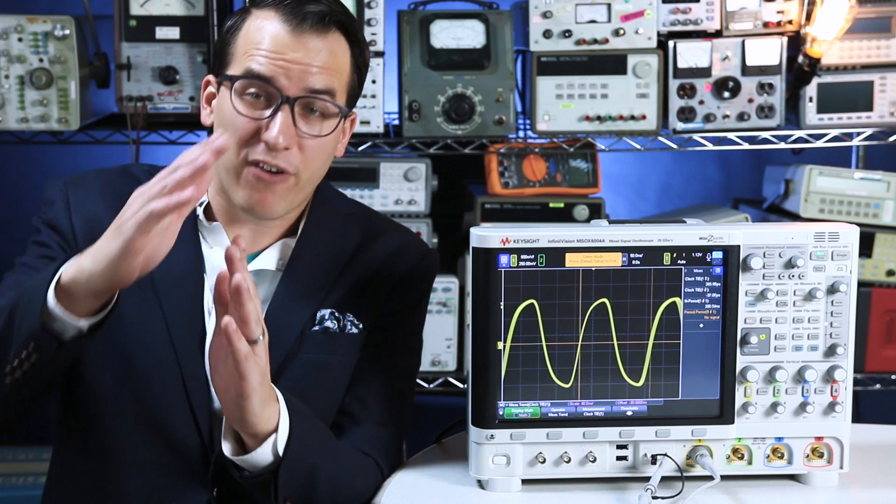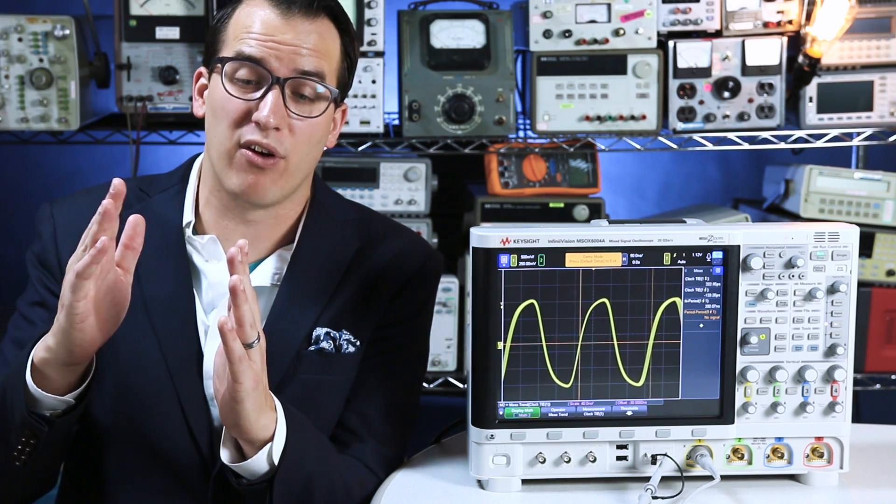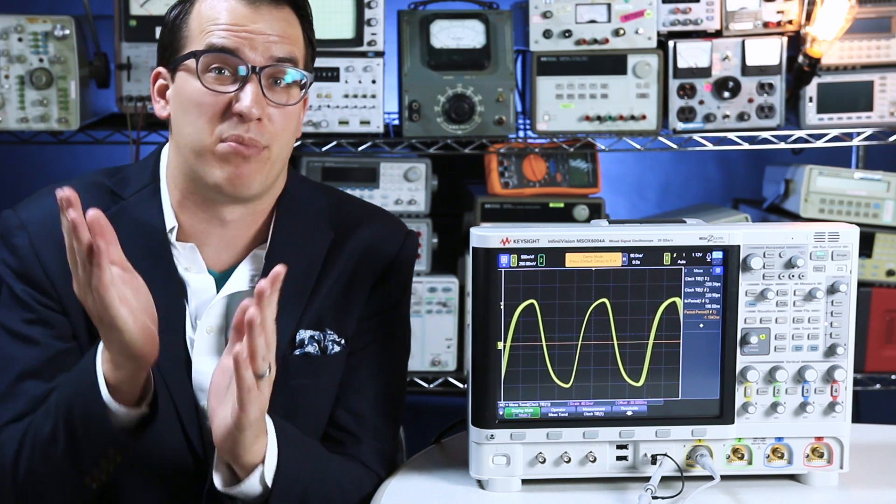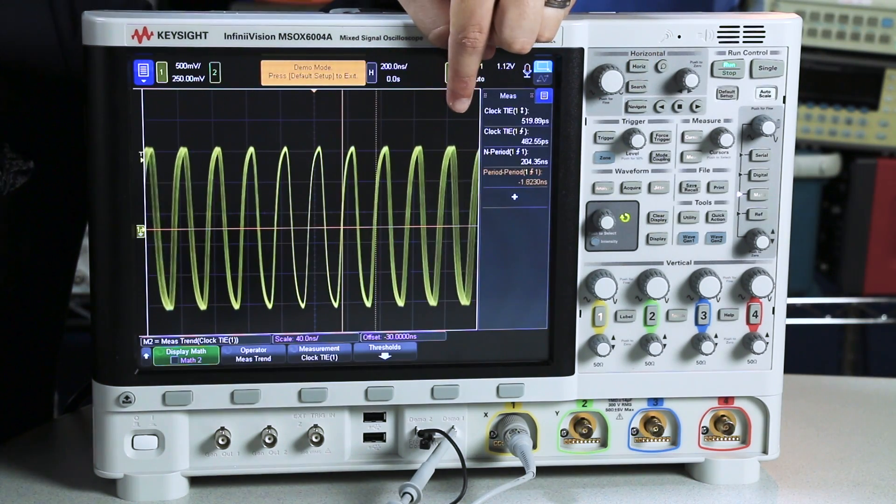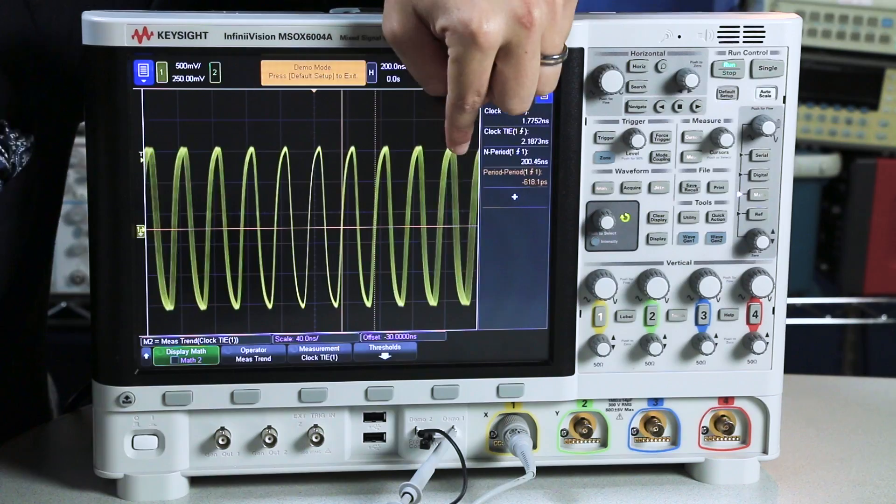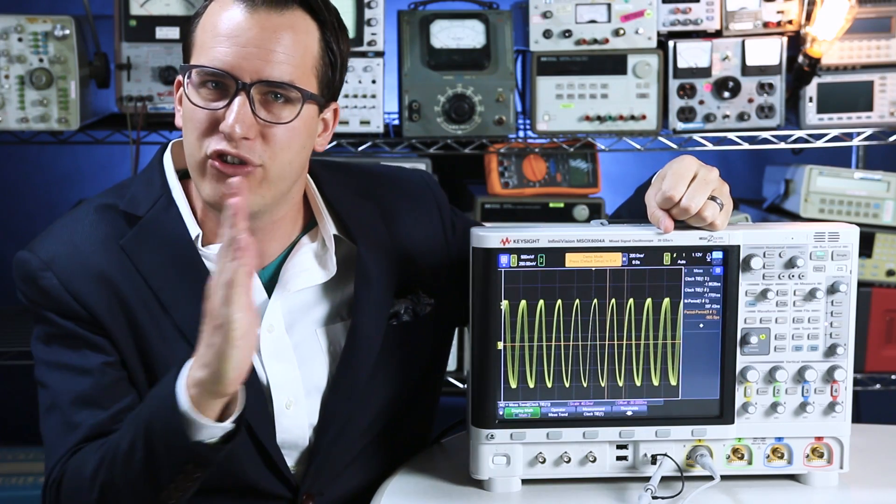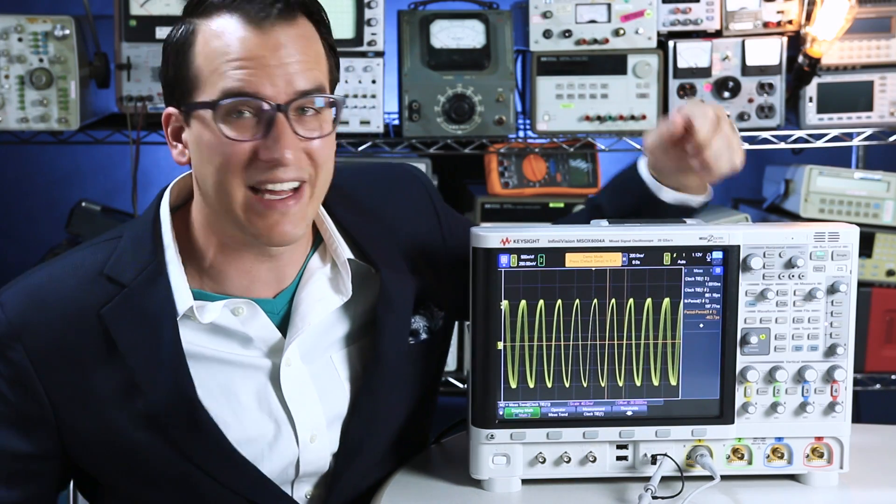Essentially jitter is just how far away your signal's actual edge is from the ideal edge that you have in a perfect world. For example, if I look at this signal as I zoom out you can see the edges farther away from my trigger point get thicker and thicker. That's because there's some jitter on those edges. Let's take a look at how to measure it.